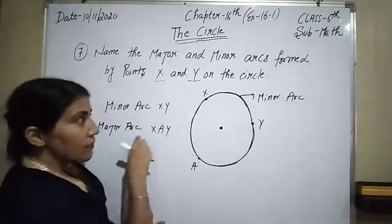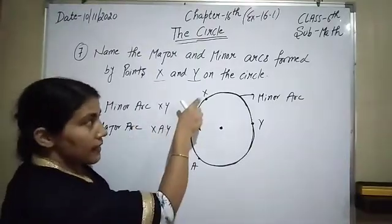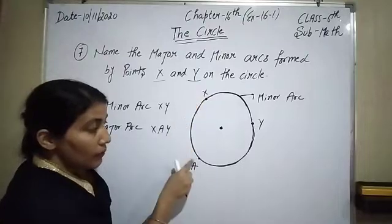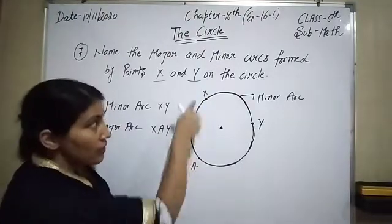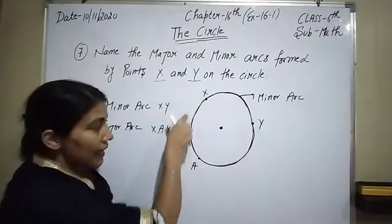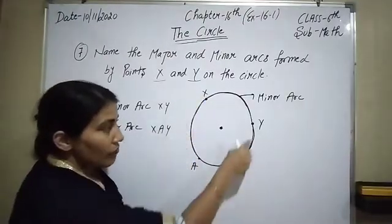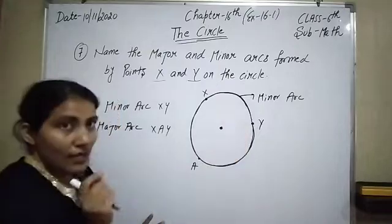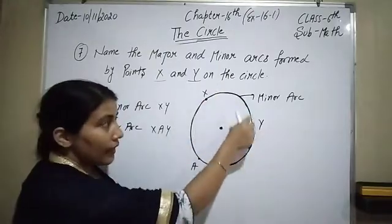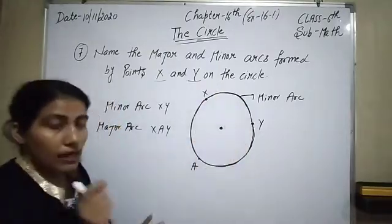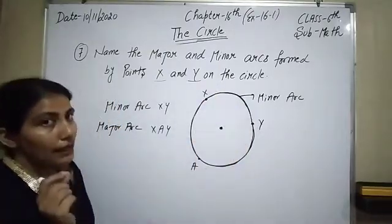For the major arc, point A also lies on the circumference, so we can say XAY is our major arc, and XY is our minor arc.